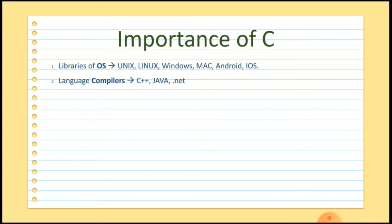Most of the language compilers are created using C language. Compilers are used to convert the code written in a programming language into machine code. Computers can only understand machine code, so that's why we need a compiler while using any programming language. C++ compiler, Java compiler, C# compiler, etc. are created using C language.